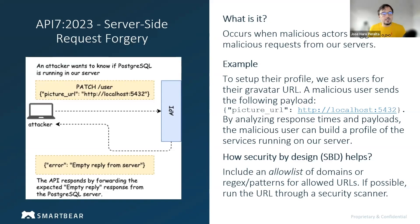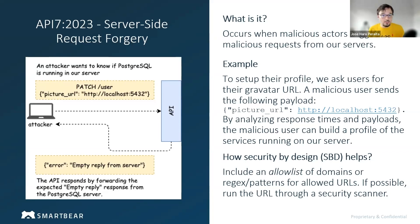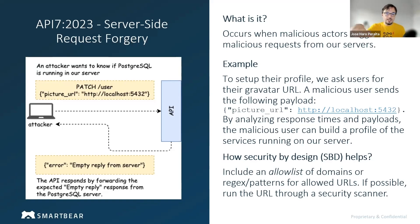A malicious user may figure out they can leverage this feature to send requests to localhost with different ports, analyzing the response time and type of response to see what services are running inside. They may try launching a request to the default Postgres server port. If Postgres is running and you launch an HTTP request, you'll get an empty reply. If that response leaks through the API, the user will know a Postgres service is running inside our server.